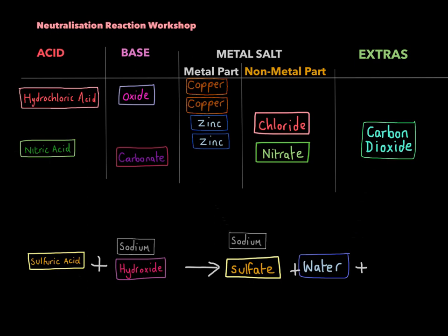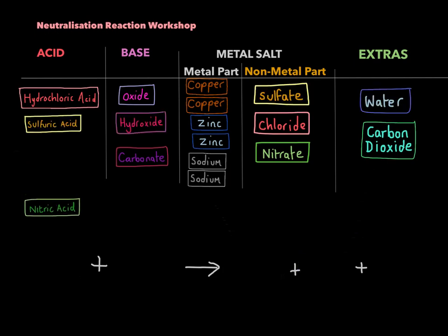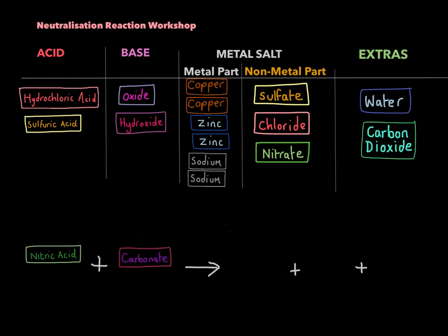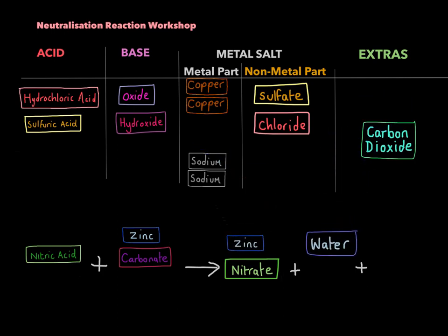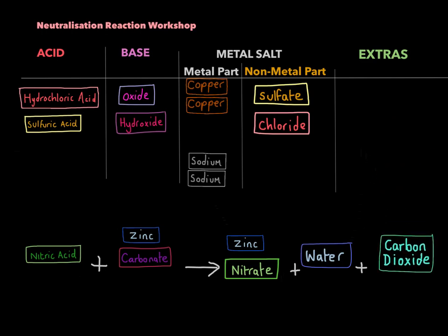So now let's try nitric acid. And this time we'll react it with a metal carbonate. I'm going to make zinc carbonate here. So obviously it's nitric acid, so I know I'm going to make a something nitrate. And obviously I'm using zinc, so it'll be zinc nitrate. As always, I get water as well. But now, because it's a carbonate, we also produce carbon dioxide.